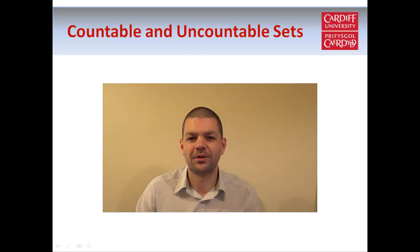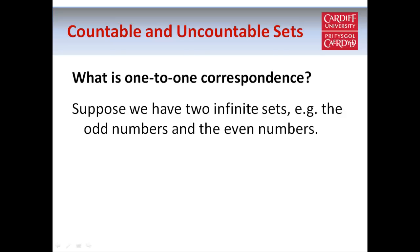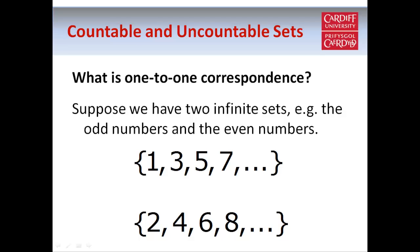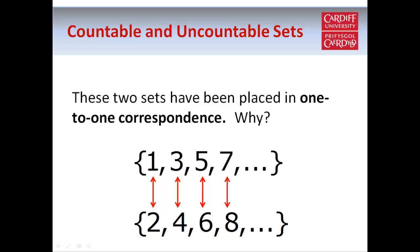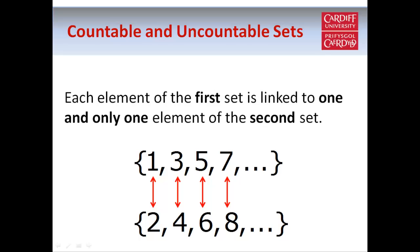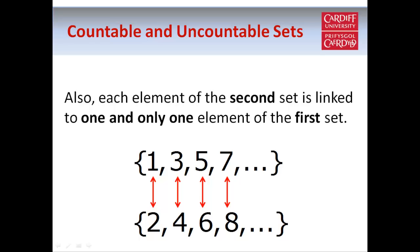So what does one-to-one correspondence mean? Well, suppose we have two sets of numbers — the set of odd natural numbers and the set of even natural numbers. We can match up the elements of these sets one-to-one. For example, we can match 1 and 2, match 3 and 4, match 5 and 6, and so on. This shows that the two sets have a one-to-one correspondence, because each element of the first set is linked to one and only one element of the second set, and vice versa.